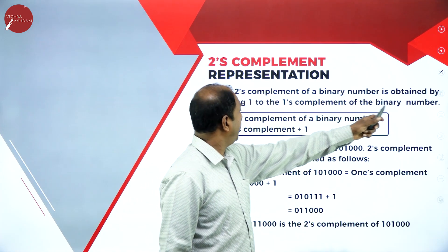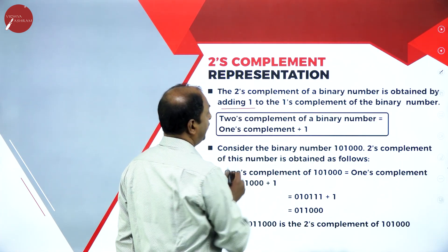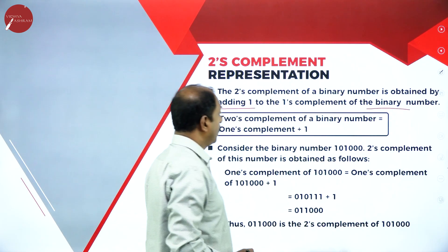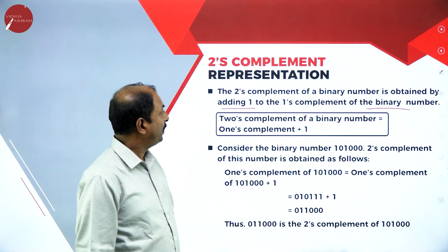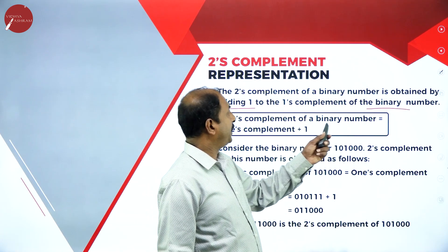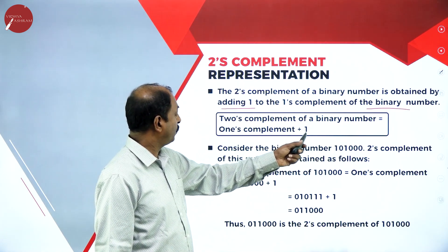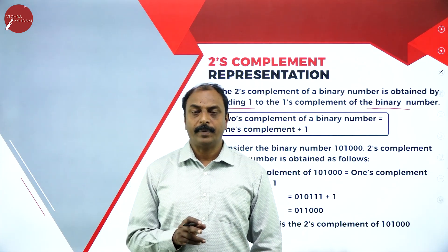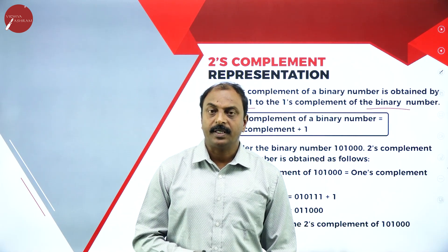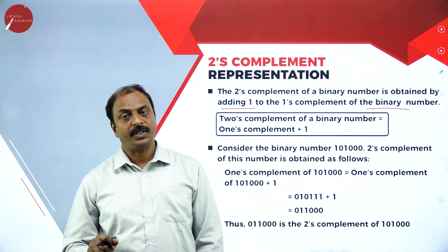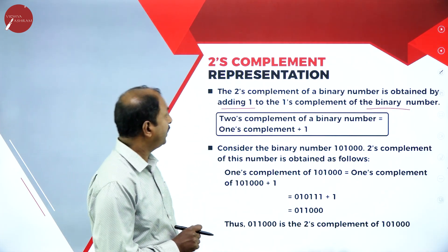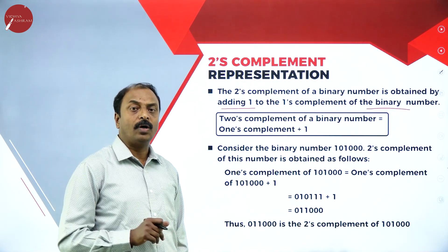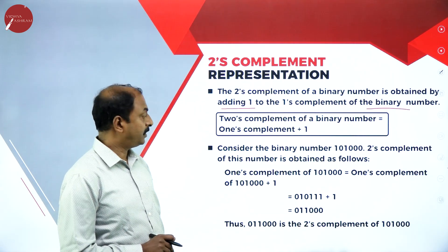Now let us see two's complement representation. The two's complement of a binary number is obtained by adding 1 to the one's complement of that binary number. So the definition is: two's complement equals one's complement plus one. First, convert the given binary number into one's complement form by changing 0 to 1 and 1 to 0, then add digit 1 to get the two's complement.